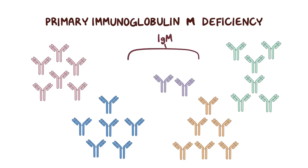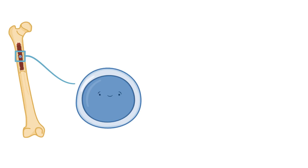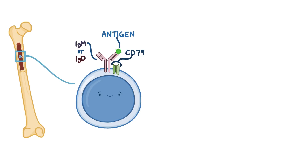Let's take a look at how B cells end up secreting different types of antibodies. Each B cell is born in the bone marrow from a stem cell and develops its own B cell receptor, which sits on the cell surface. The B cell receptor consists of two parts: a protein called CD79 that communicates with the rest of the cell, and a membrane-bound IgM or IgD antibody that can bind to an antigen. An antigen is any substance recognized by that particular antibody.